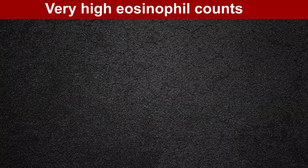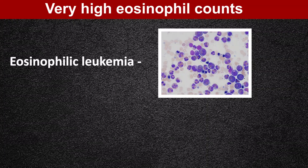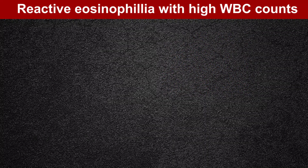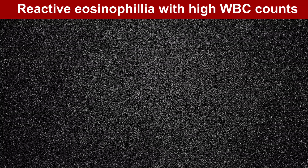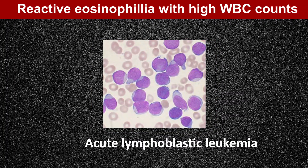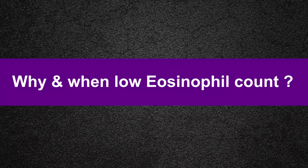Very high eosinophil counts may be seen in eosinophilic leukemia and idiopathic hypereosinophilic syndrome. Also, reactive eosinophilia with a high white blood cell count can be seen in T-cell lymphoma, B-cell lymphoma, and acute lymphoblastic leukemia.